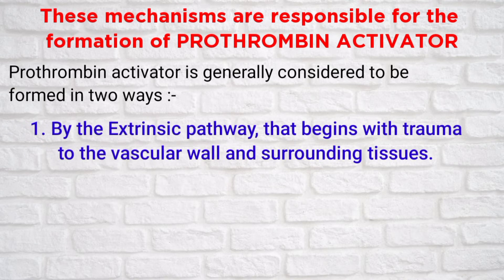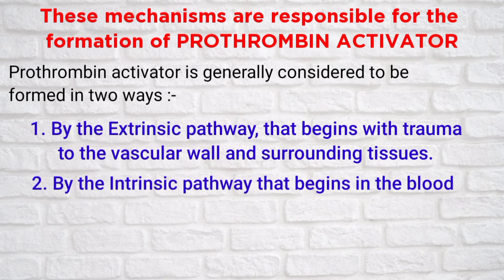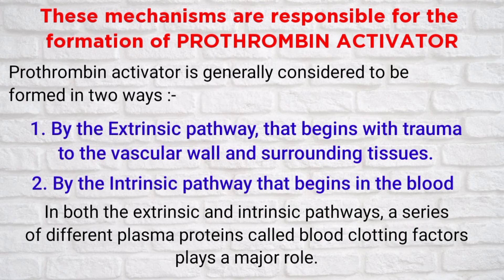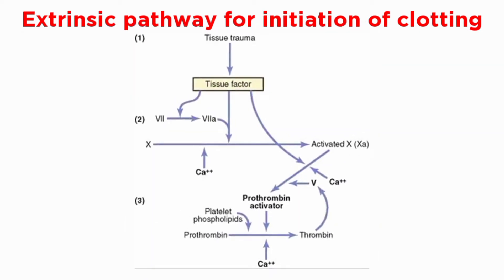Prothrombin activator is generally considered to be formed in two different ways: one by the extrinsic pathway, that begins with trauma to the vascular wall and surrounding tissue, and second by the intrinsic pathway, that begins in the blood. In both pathways, a series of different plasma proteins called blood clotting factors play a major role.